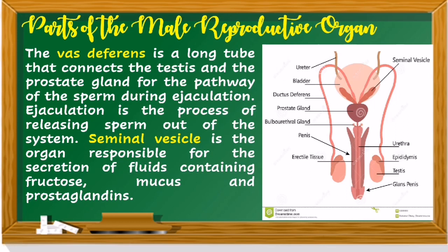The vas deferens is the long tube that connects the testes and the prostate gland for the pathway of the sperm during ejaculation. As you can see in the picture, it is the long tube that connects the testes. Ejaculation is the process of releasing sperm out of the system. The seminal vesicle is the organ responsible for the secretion of fluids containing fructose, mucus, and prostaglandins.